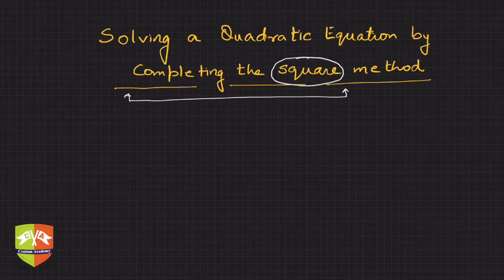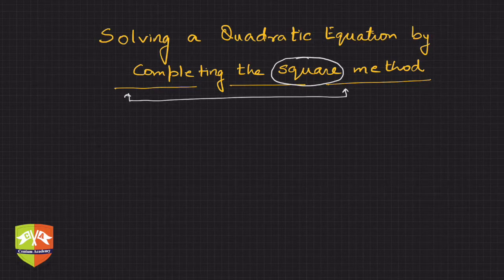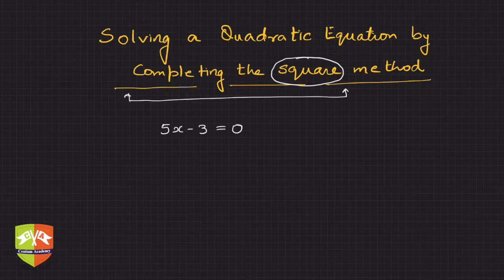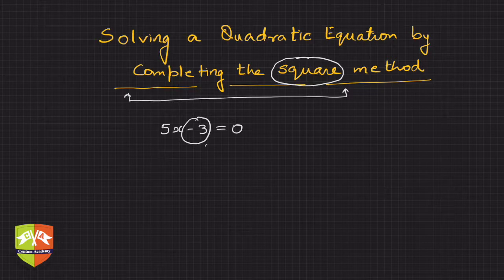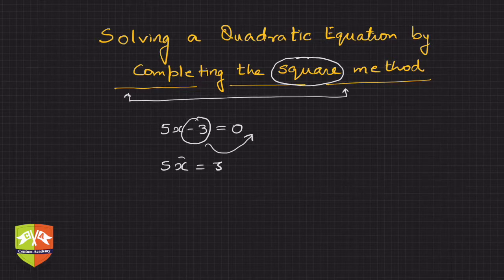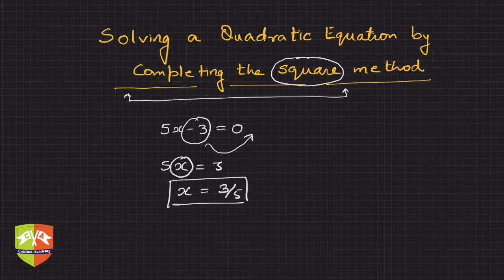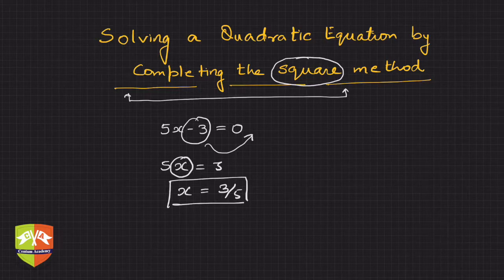What is the problem with quadratic equations vis-à-vis linear equations? In a linear equation, we had a very simple way of solving in one variable. For example, 5x minus 3 equals 0 — the method was to separate the variable side and the constant side, giving 5x equals 3, and then x equals 3/5. So it was easy to do that separation and solve by simple cross multiplication.